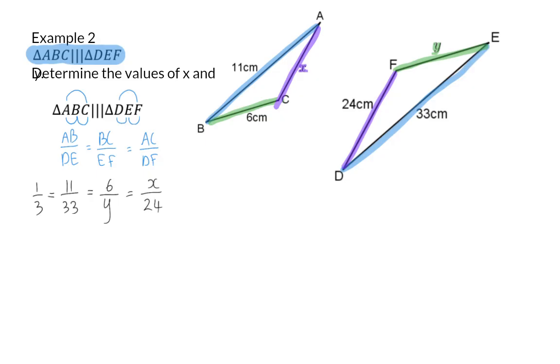AC is the X value and DF is 24. To solve X and Y, I am going to set up two equations by making use of the simplified ratio of a third. So first off, I know that the ratio of 6 over Y should be the same as a third.